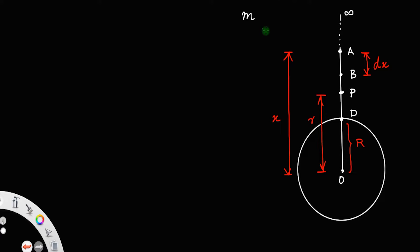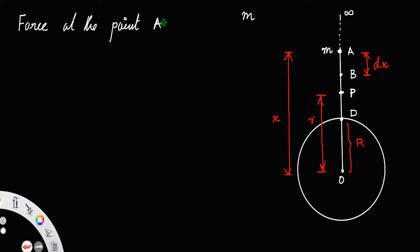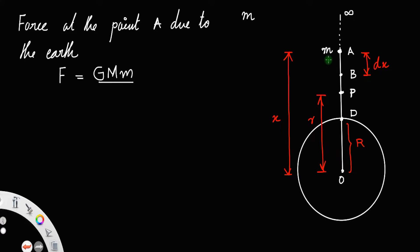Suppose m is the mass we are bringing from infinity to the point P. At the point A, we have the mass m. The force at point A due to the earth is F = GMm/x², where M is the mass of the earth, m is the considered mass, and x is the distance from O to A.